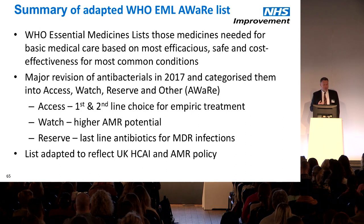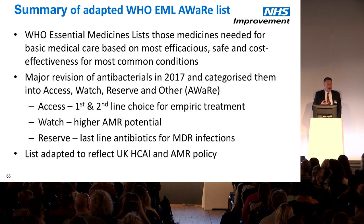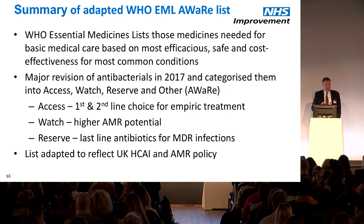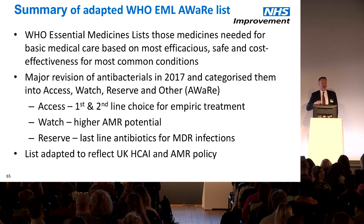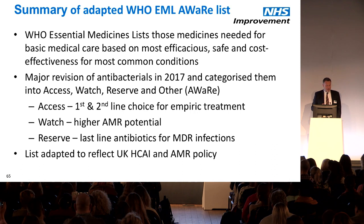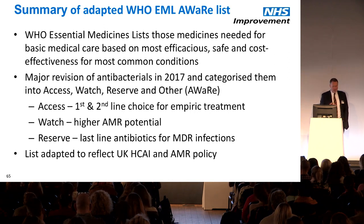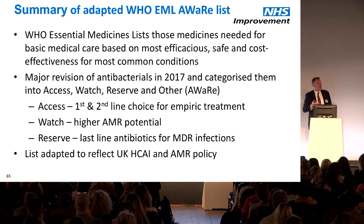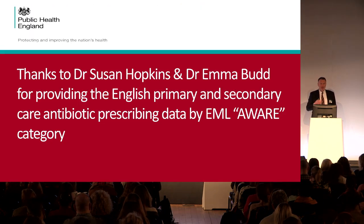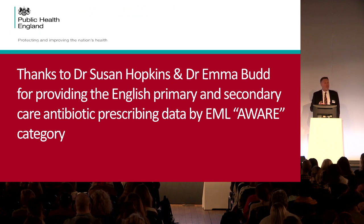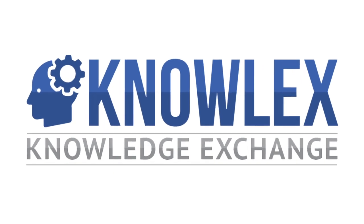In summary, the WHO Essential Medicines List is a list of medicines needed for basic medical care of common conditions, based on efficacy, safety, and cost-effectiveness. A 2017 revision separated antibiotics into Access, Watch, and Reserve — the AWaRe framework — where Access covers first- and second-line empiric therapy, Watch covers agents with higher resistance or toxicity potential, and Reserve covers last-line antibiotics. Within England, APPRI have revised these categories to apply to the UK context. Huge thanks to Susan Hopkins and Dr. Emma Budd from Public Health England for pulling this data together.